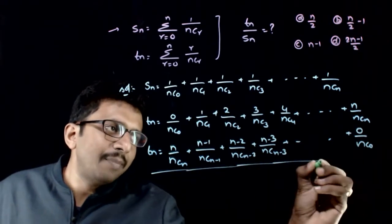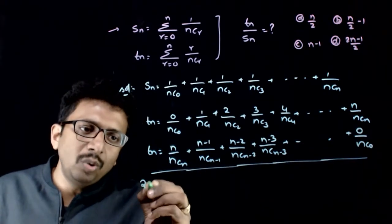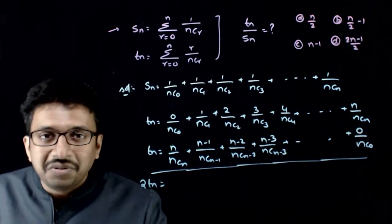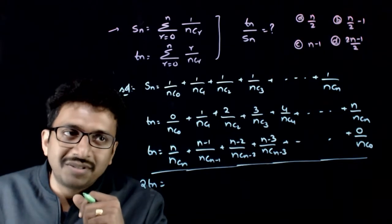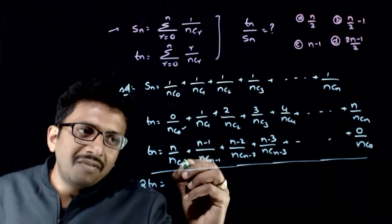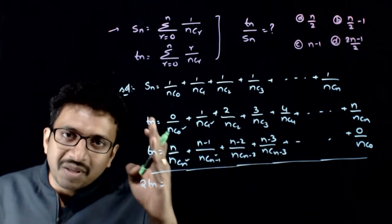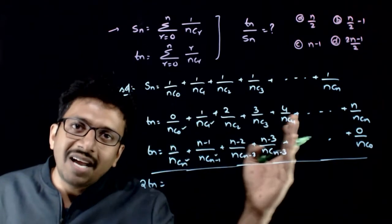Now, what happens if you add these two? 2 times Tn is equal to - we use symmetry of binomial coefficients. We use the theory of symmetry of binomial coefficients. That is, nC0 will be same as nCn. nC1 will be same as nC(n-1). The binomial coefficients from the starting and the end will be same.